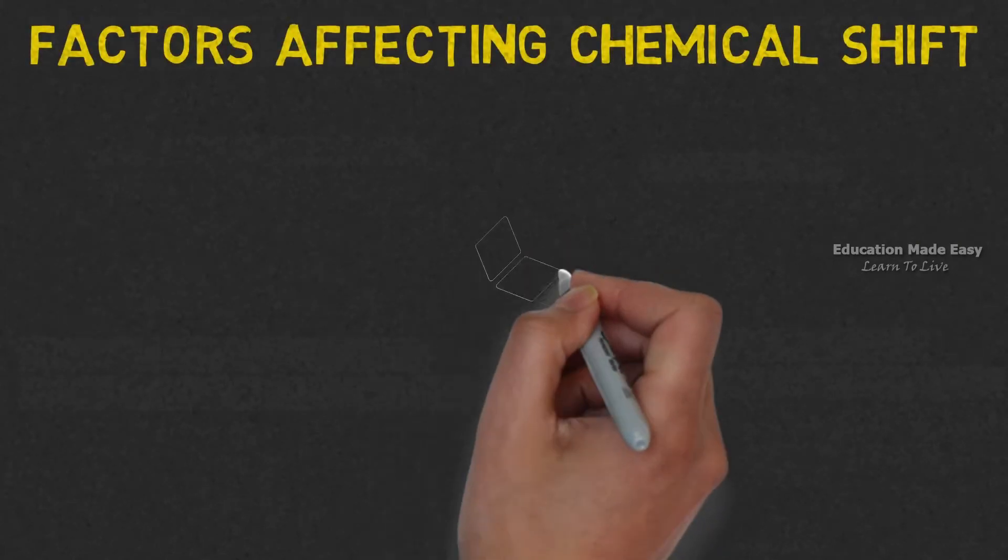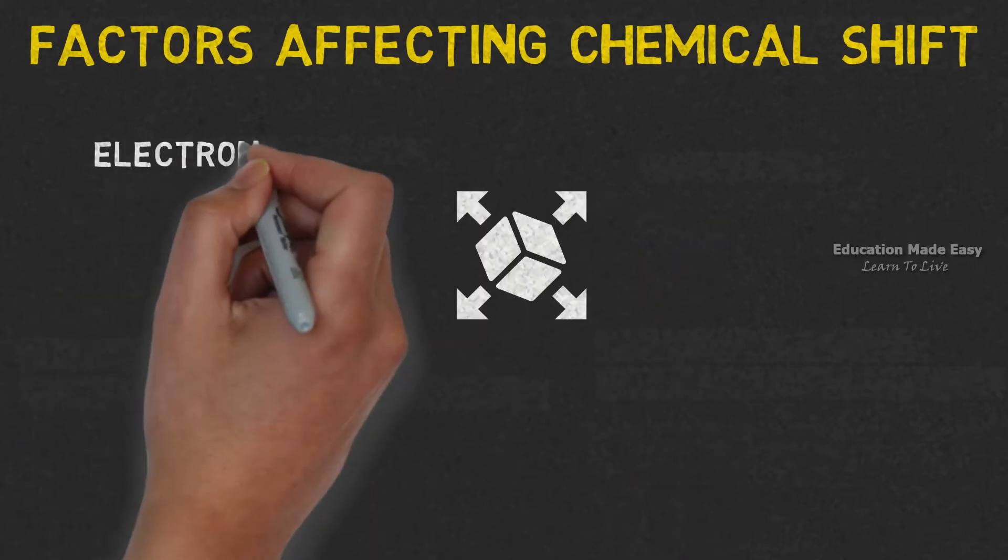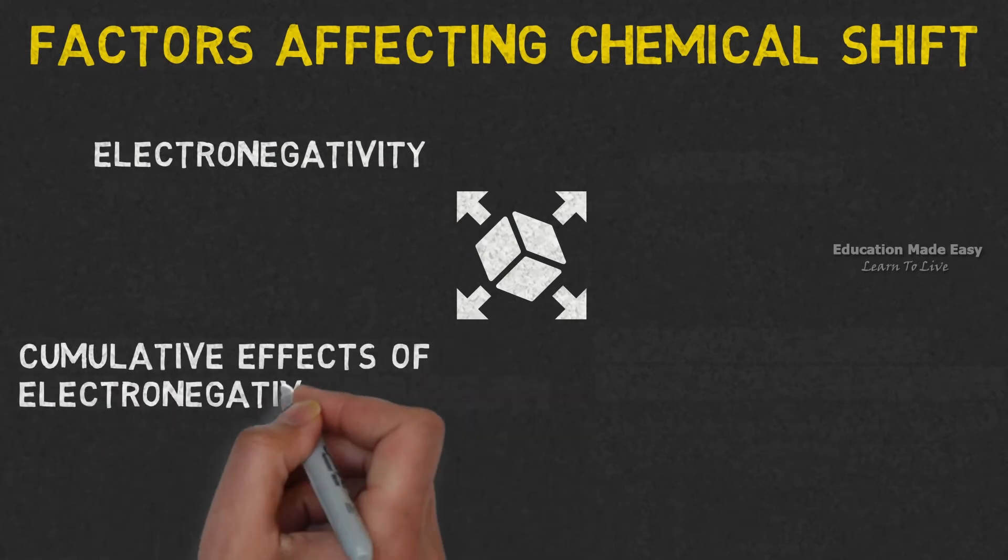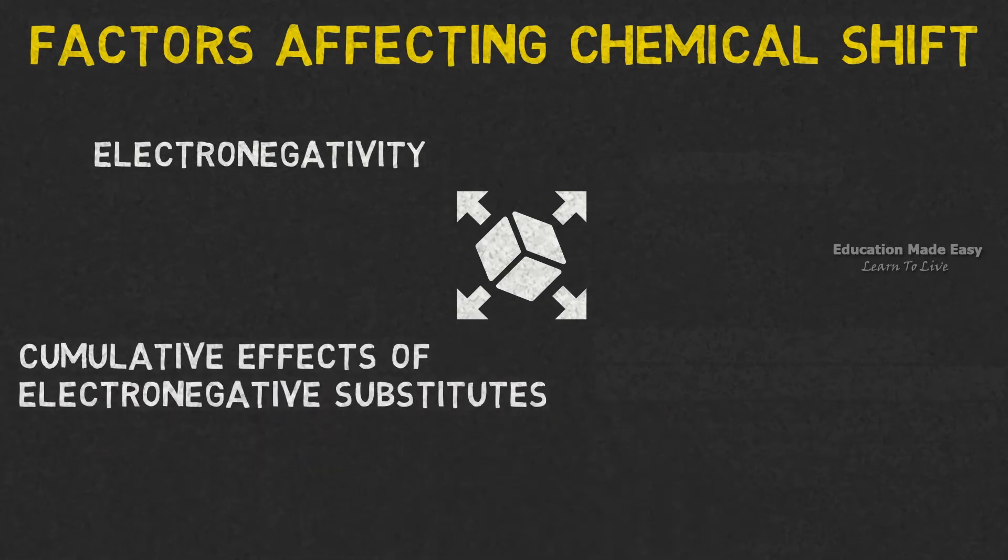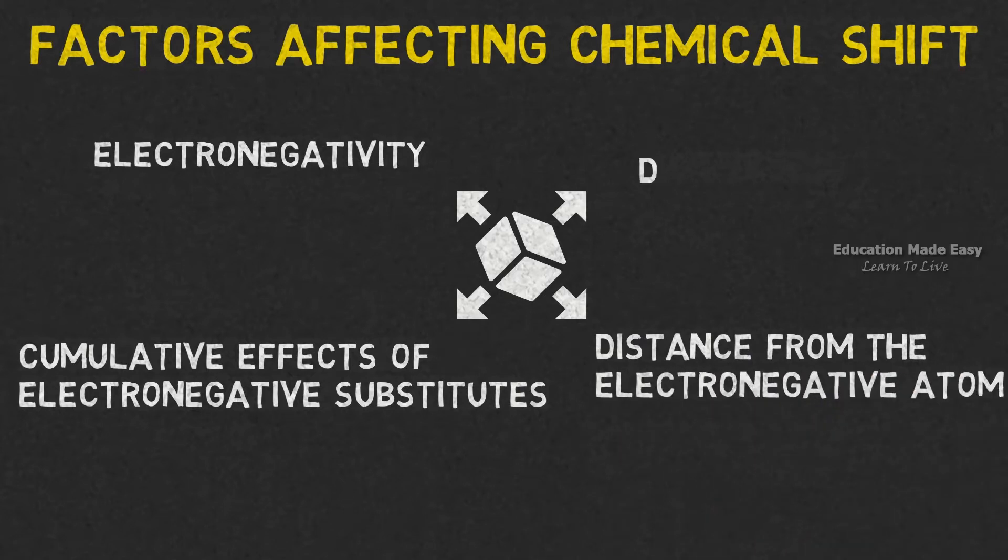There are four factors affecting the chemical shift. They are electronegativity, cumulative effects of electronegative substitutes, distance from electronegative atom, and deshielding.